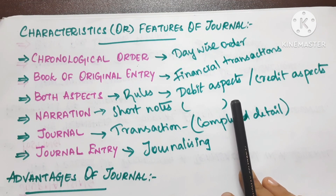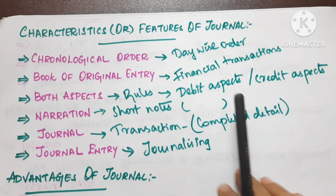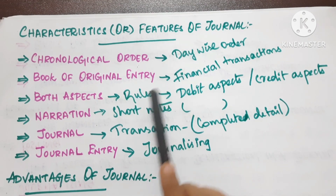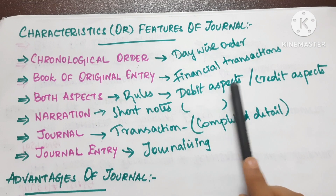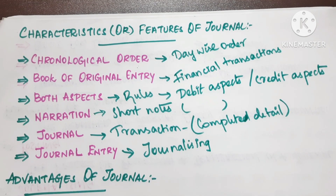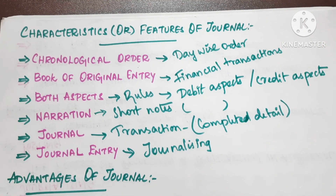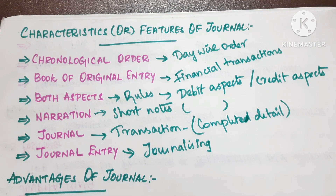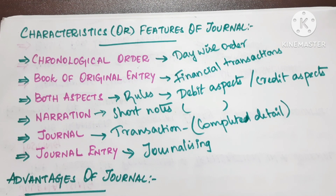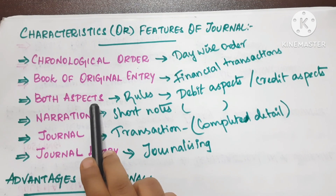The characters or features of the journal: day-to-day transactions must be recorded in chronological order. It is a book of original entry, and it records both aspects — that is, both debit and credit effects of each transaction according to the rules.